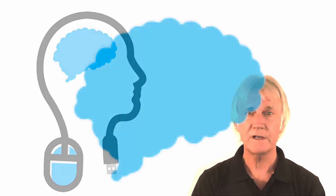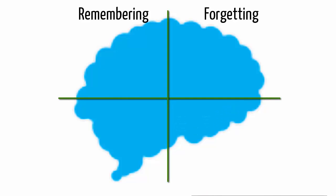This matrix of cultural memory helps. It doesn't tell us rights or wrongs, just how cultural memory works. It has four quadrants based on remembering and forgetting, and active and passive.